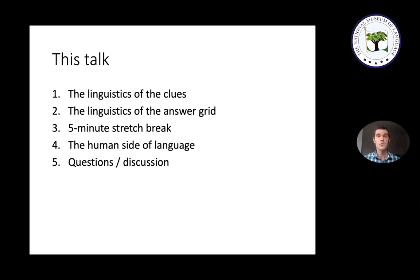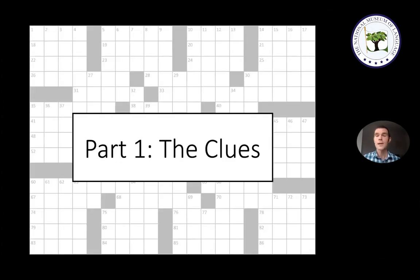I'll first talk about the linguistics of the clues, then the linguistics of the answer grid — each taking about 20 to 25 minutes. Then we'll take a five-minute stretch break, and I'll close by discussing the more human side of language before opening up for questions. So let's start with the linguistics of crossword clues. The main topic here is ambiguity — language is absolutely teeming with it.